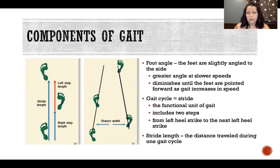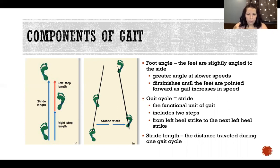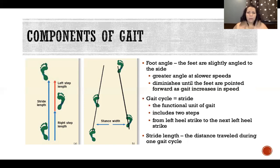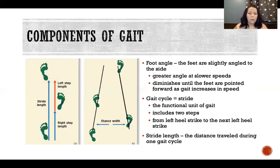Foot angle is the angle of the feet toward the lateral direction — the forefoot tends to angle outward away from the body. We have a greater foot angle at slower speeds, and that angle diminishes the faster we go until our feet are pointed more forward at higher speeds. When measuring foot angle, we measure from a neutral forward position and record the number of degrees outward — so it's measured from a neutral position rather than from the x-axis as we usually do.